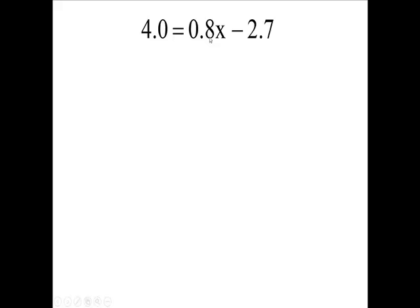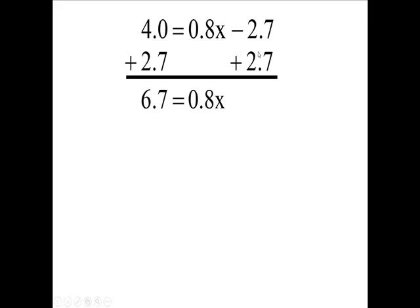So what number is next to the x? The negative 2.7. So we will take the opposite of that and add 2.7 here and here. Adding, the left side I get 6.7 equals 0.8x.